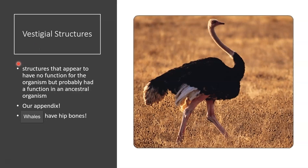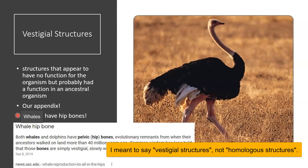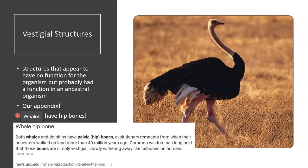Vestigial structures are structures that appear to have no function for the organism but probably had a function in an ancestral organism. Our appendix is an example — it does nothing in our bodies today, but it's theorized that it did function many hundreds of thousands of years ago in an ancestral organism. Whales actually have hip bones — they don't walk, but they have homologous structures in their hips that are actual bones. Over time, as the ancestors of whales moved into the sea and legs were no longer needed, the legs disappeared, but you can actually still see hip bones if you were to dissect a whale.